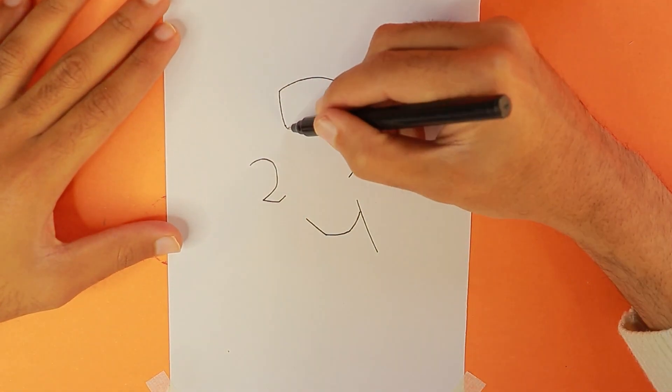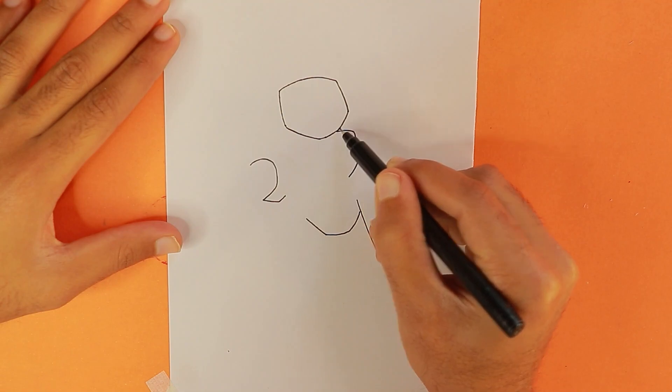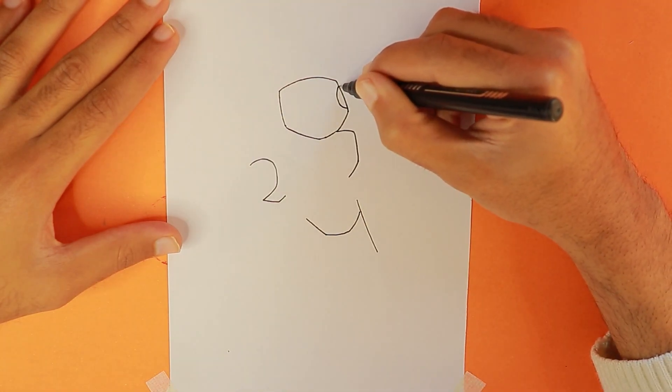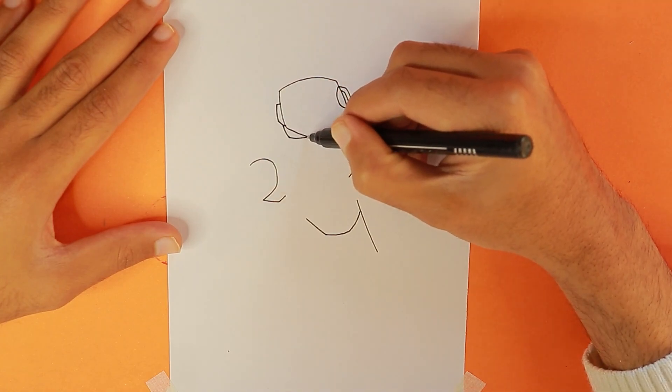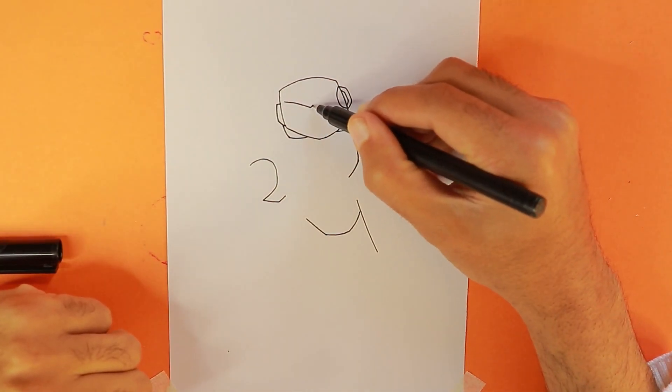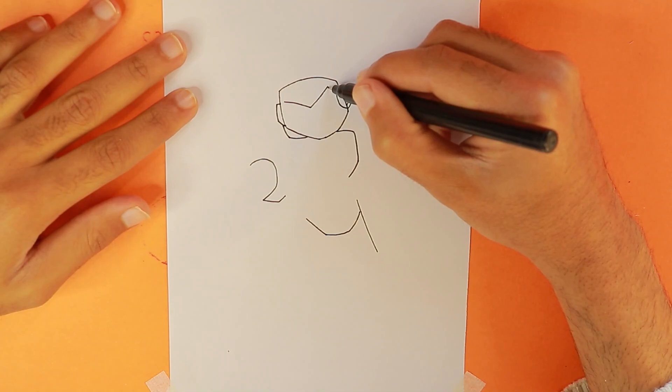First of all, I am drawing the face of Ironman by using number 3. Just follow my steps and you will make Ironman perfectly.